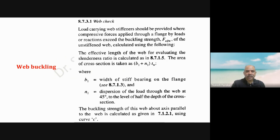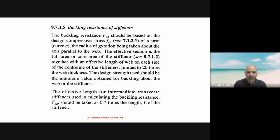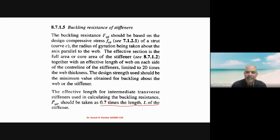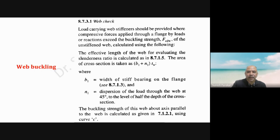Now we can see the buckling resistance. If you read the clause carefully, you will get the value of effective length, which is mentioned as 0.7 times the length L of the stiffener. Here we have to consider d, which is the depth of the web.